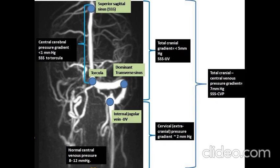The normal central cerebral venous pressure gradient from the superior sagittal sinus to the torcular averages 1 mmHg, and the total cranial gradient from the superior sagittal sinus to the internal jugular vein averages 5 mmHg.